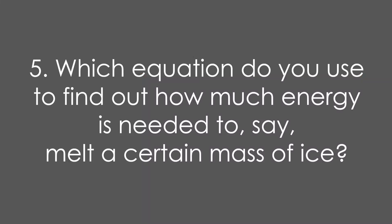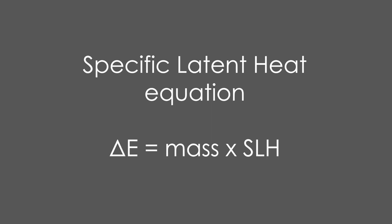Question 5: Which equation do you use to find out how much energy is needed to, say, melt a certain mass of ice? It's the specific latent heat equation: ΔE or Q = mass × SLH. And specifically, that's going to be the latent heat of fusion, not vaporization in this case.